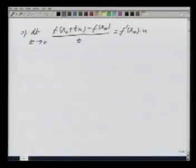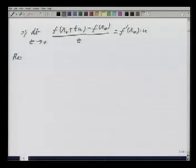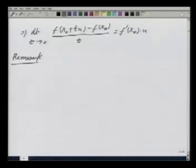So this implies that if the function is differentiable at x naught, then the directional derivatives exist in all possible directions. Not only that, it also tells us how to compute the directional derivatives. For that, I will state it as a remark.